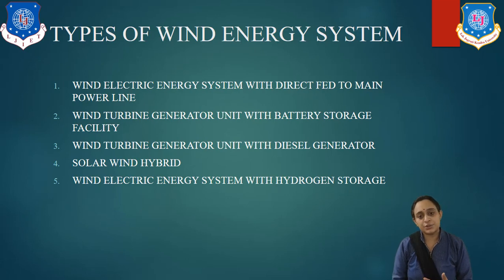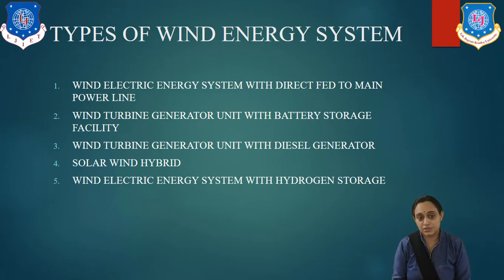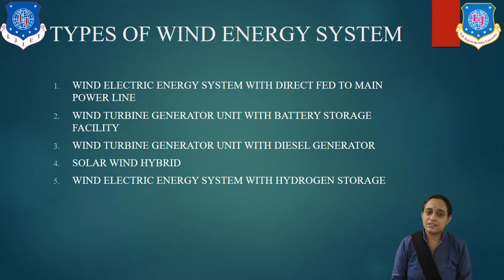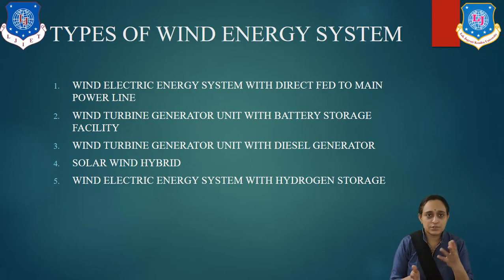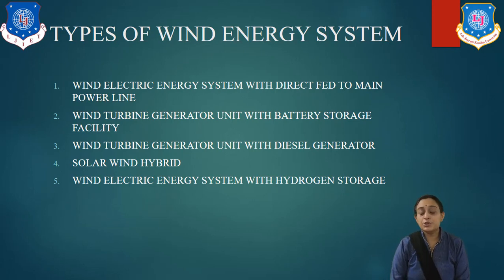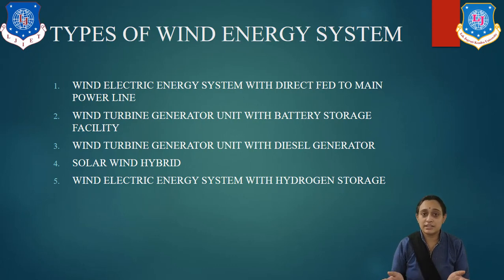Third: wind turbine generator unit with diesel generator — generally used at remote places. The diesel generator is used only when wind energy is absent or the machine is under maintenance, at which point the diesel generator side supplies energy to the grid. Fourth: solar-wind hybrid system, meaning solar energy and wind energy combined. Generally located at tall buildings and flat open areas — during the day, photovoltaic solar energy is generated, and when there is no sunlight, wind energy is generated.